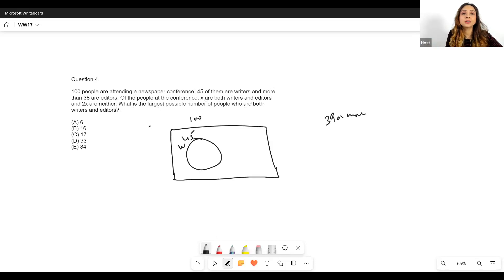Look, now we can't place the circles where we feel like, because there are constraints on both and neither as well. So this is what it looks like. I have an x over here. This is my editor circle. I don't know the exact value of this, but I know that 2x is outside - that is my neither. All I know is that all of them add up to give me 100.